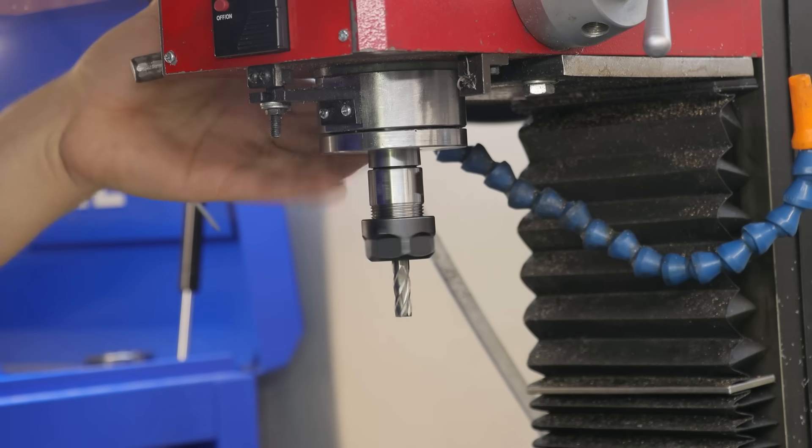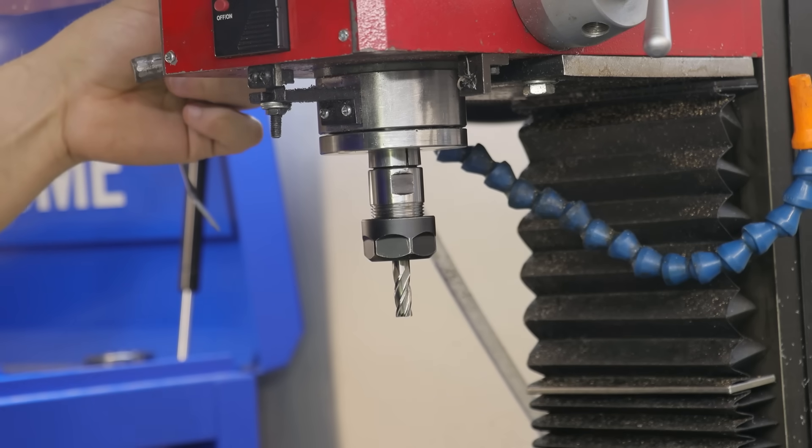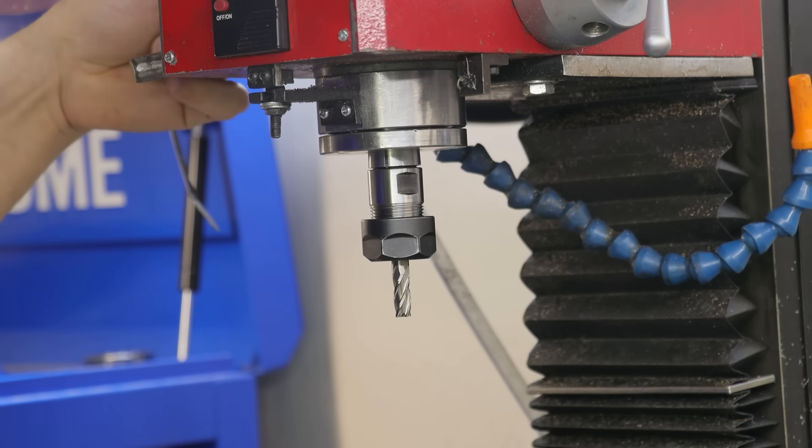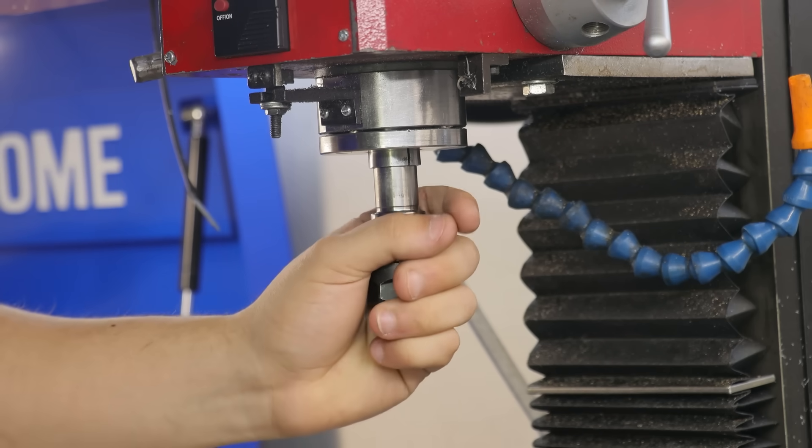Unfortunately though, we are having one issue and that's the collet is starting to slip inside the morse taper. After a bit of investigating, I found out that the collet was bottoming out on the bottom of that flange nut.